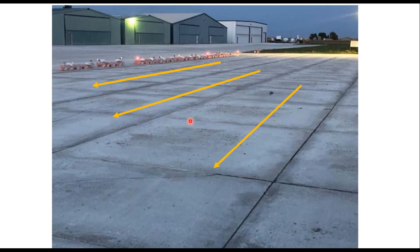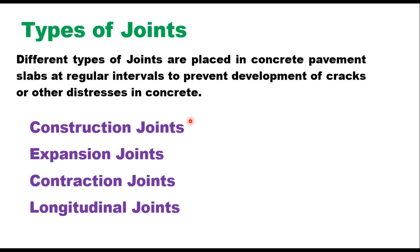Based on their functions, joints in a cement concrete pavement can be classified into four categories: construction joints, expansion joints, contraction joints, and longitudinal joints. We will discuss each of these joints in this session.